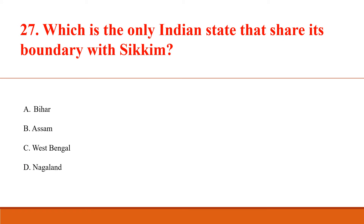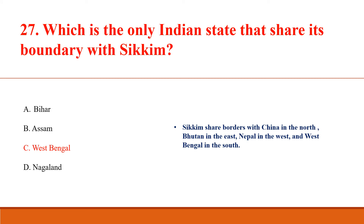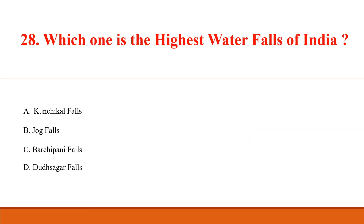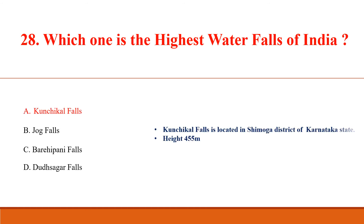Which is the only Indian state that shares its boundary with Sikkim? Answer C: West Bengal. Sikkim shares a border with China in the north, Bhutan in the east, Nepal in the west, and West Bengal in the south. Which one is the highest waterfall of India? Answer A: Kunchikal Falls, located in Shimoga district of Karnataka state, height 455 meters.